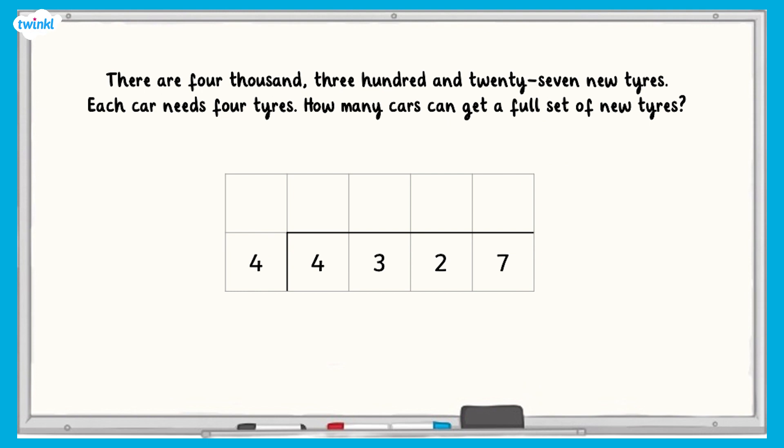Now it's time for a challenge. It's important to know what the remainder represents when solving a division problem. Sometimes the answer must be a whole number. There are four thousand three hundred and twenty seven new tyres. Each car needs four tyres. How many cars can get a full set of new tyres?